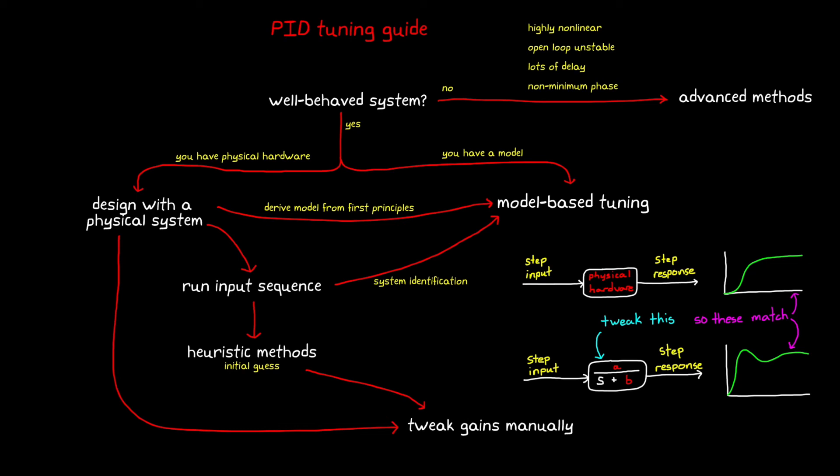And the nice thing about system ID is that you can generate a model without knowing all of the detailed kinematics and dynamics of your system, which is often a limitation we have. And instead, just think about the general behavior.